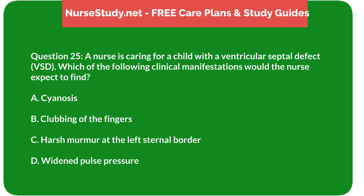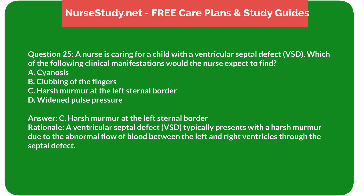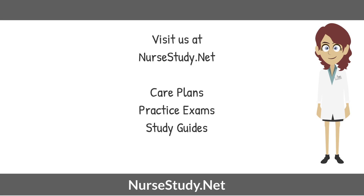Question 25: A nurse is caring for a child with a ventricular septal defect (VSD). Which clinical manifestation would the nurse expect to find? A) cyanosis, B) clubbing of the fingers, C) harsh murmur at the left sternal border, D) widened pulse pressure. Answer: C) harsh murmur at the left sternal border. Rationale: A ventricular septal defect (VSD) typically presents with a harsh murmur due to the abnormal flow of blood between the left and right ventricles through the septal defect. Visit nursestudy.net for more nursing practice exams, care plans, and study guides.